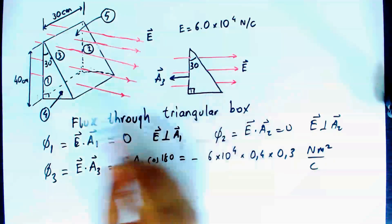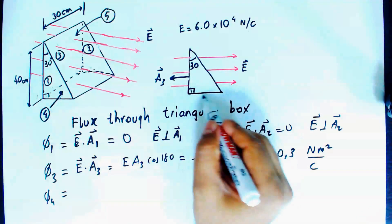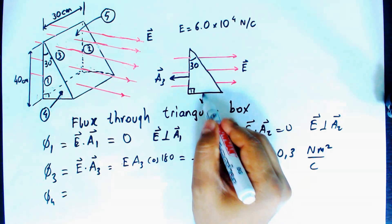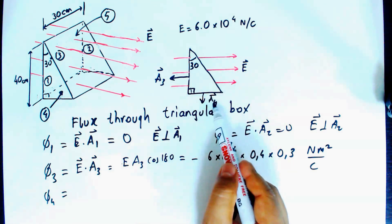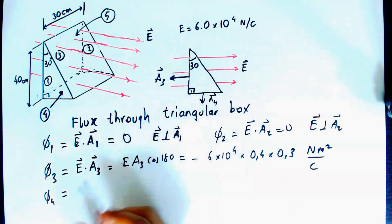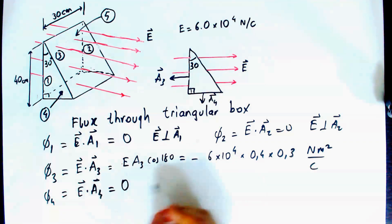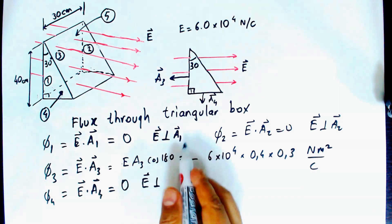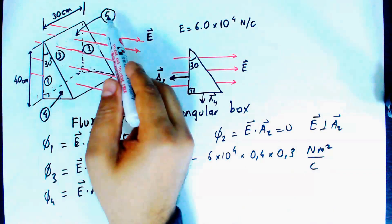For the bottom face, face four, the area vector A₄ points downward and is perpendicular to the electric field lines. So flux four equals zero because the electric field and area vector four are perpendicular to each other.